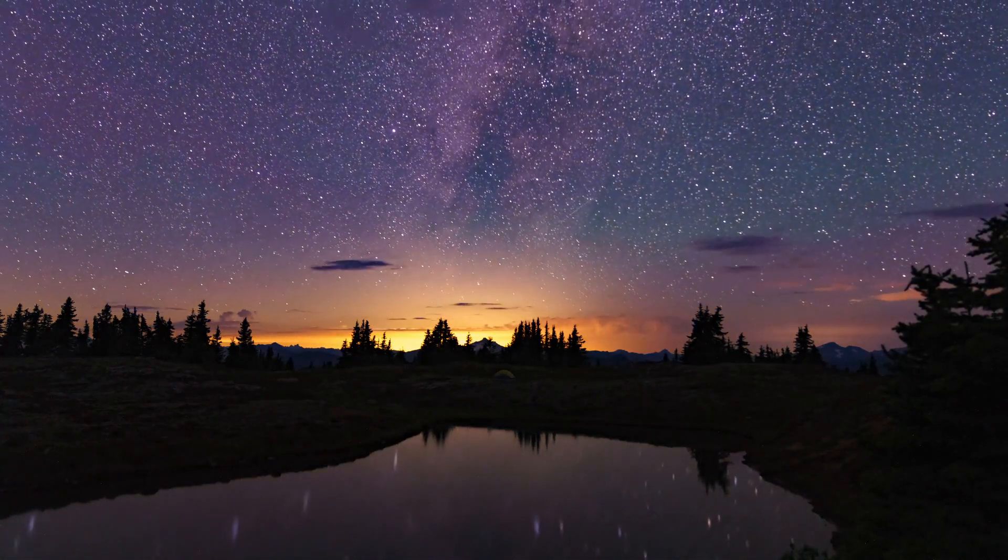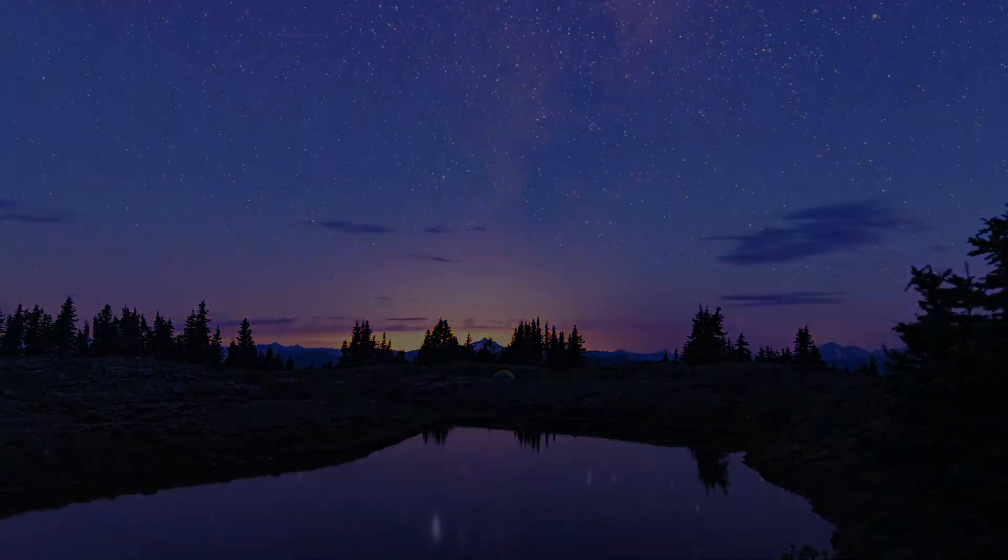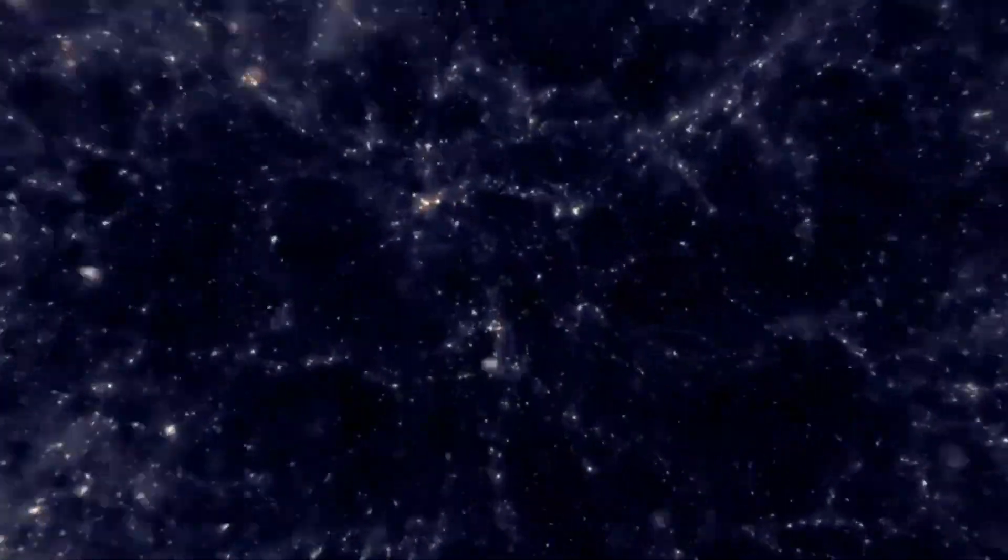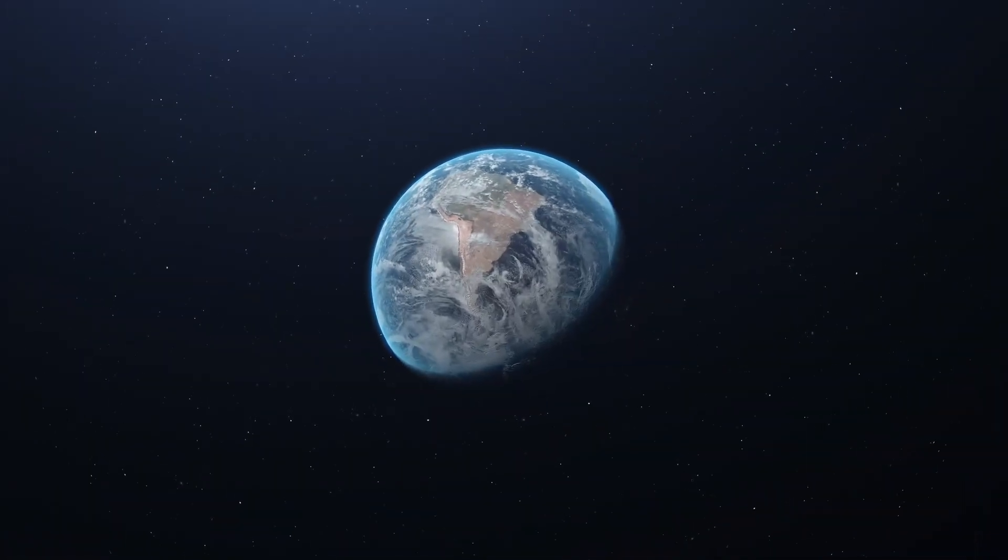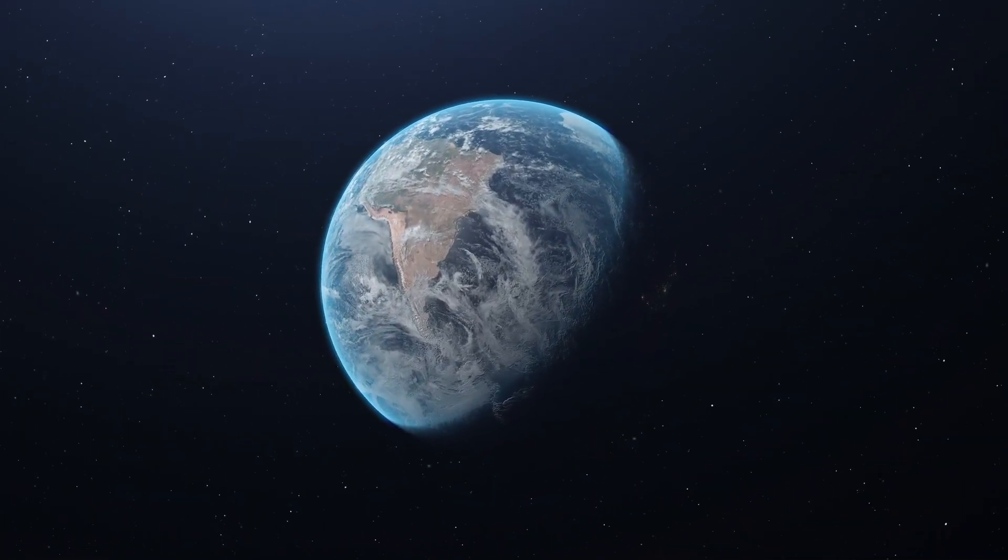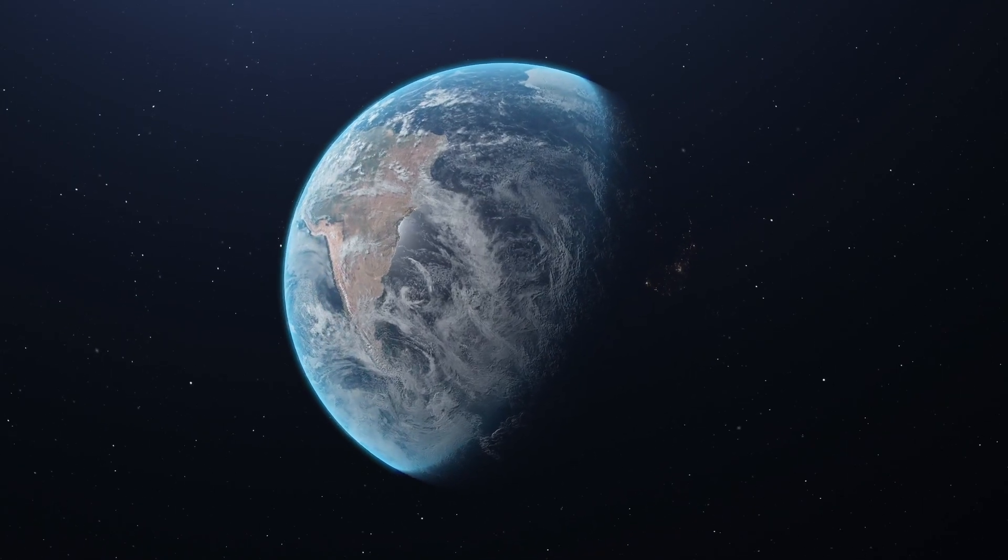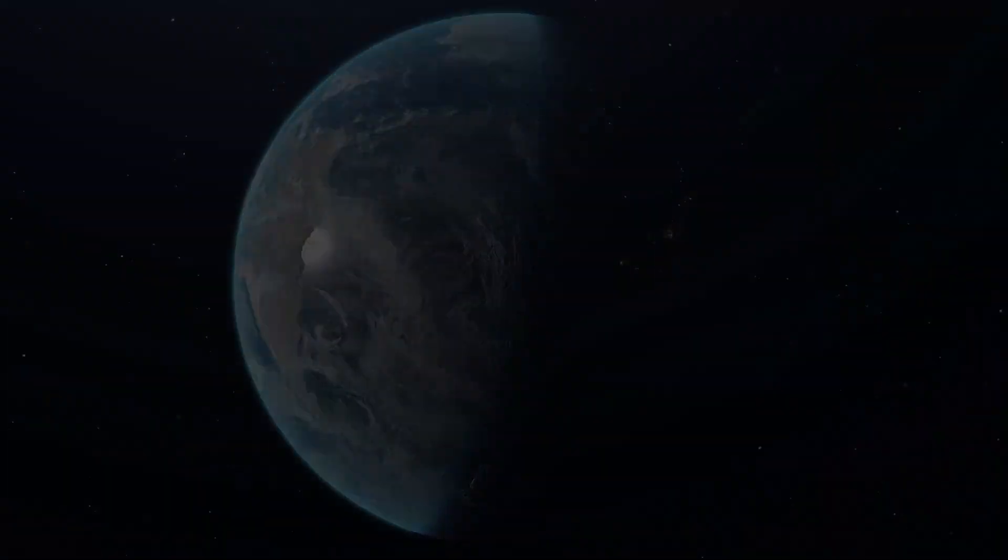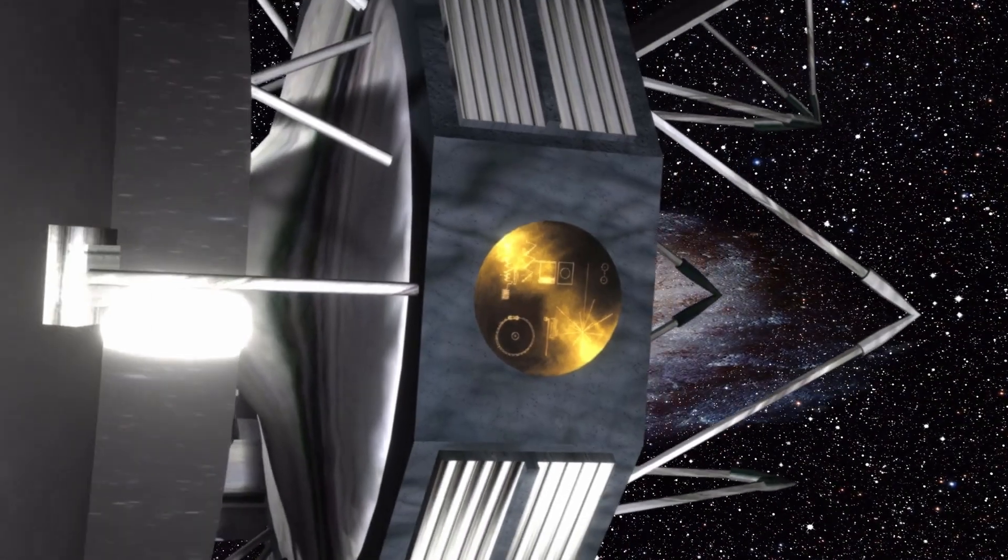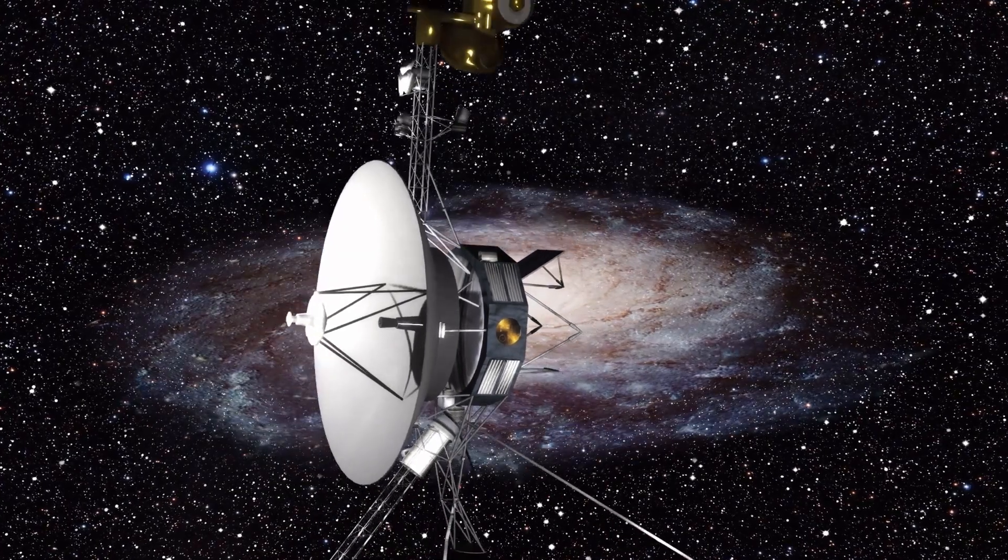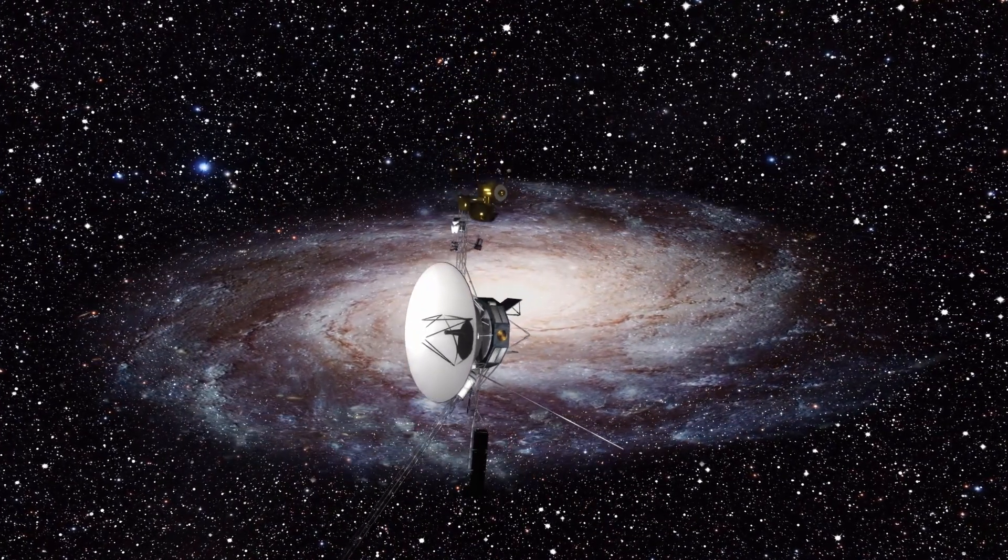The secret of Voyager's longevity is their power source. Each probe is equipped with three radioisotope thermoelectric generators, or RTGs, which contain an amount of plutonium. The heat of radioactive decay is converted into a usable electric current that powers the spacecraft systems. Because the Voyager's plutonium fuel has a half-life of nearly 90 years, it is ideal for providing energy for quite a long time.